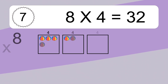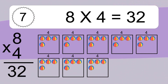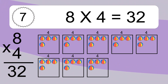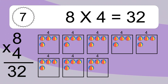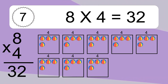8 times 4 equals what? 8 times 4 equals 32. We have 8 boxes and each box has 4 colorful balls inside. If you count all the balls in all the boxes together, you will have 8 times 4 balls. This equals 32 balls.